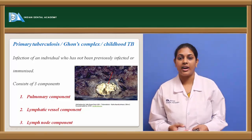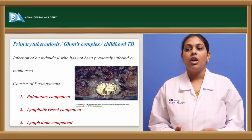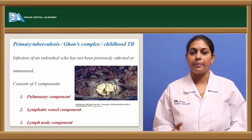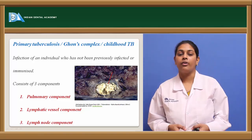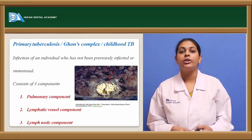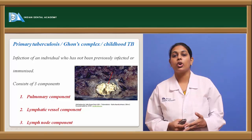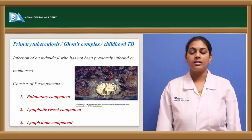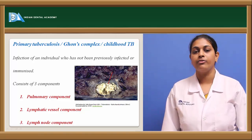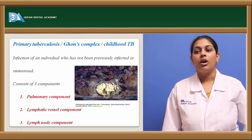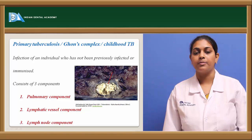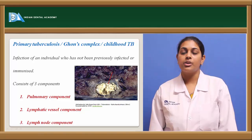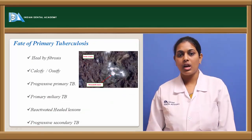Coming to the third component, the lymph node component: the hilar lymph nodes as well as the tracheobronchial lymph nodes are usually enlarged. Microscopically it gives a matted appearance with caseation necrosis. These are the three components of primary tuberculosis.